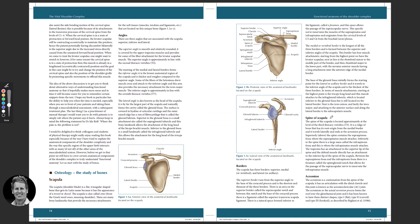We've got the spine of the scapula — it's like a ridge along there. Above it is supraspine and below it is the infraspine. Part of the trapezius muscle attaches to this. Then we've got the acromion — this is the acromion process here. The space underneath is the subacromial space, where the supraspinatus tendon and the subacromial bursa could get caught. It's roughly about 8 to 12 millimeters — the distance within that subacromial space.